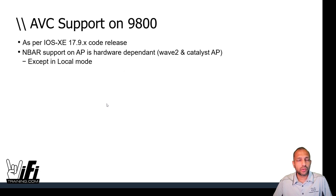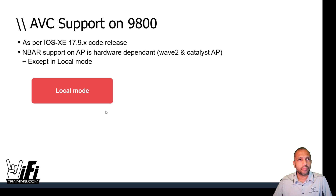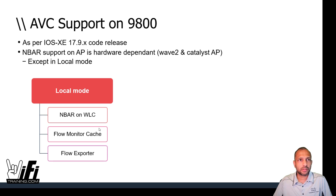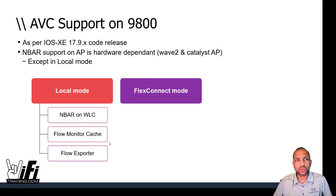Let's summarize what is supported across the three deployment models: local mode, FlexConnect mode, and fabric mode (SD-Access wireless). In local mode, NBAR is applicable at the controller level — traffic comes to the controller and actions are taken there. The flow monitoring cache is maintained at the controller, and you can export to third-party collectors.